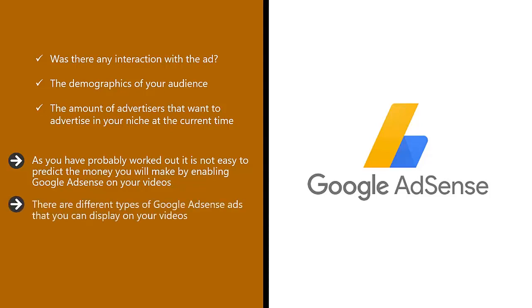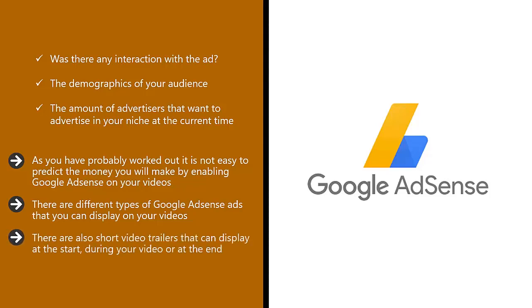There are different types of Google AdSense ads you can display on your videos. One of the most common is a standard banner displaying at the bottom of the video. There are also short video trailers that can display at the start, during your video, or at the end. Sometimes the viewer can skip these trailers, and other times they will have to watch them.